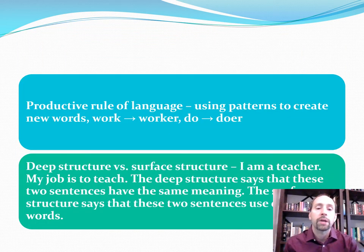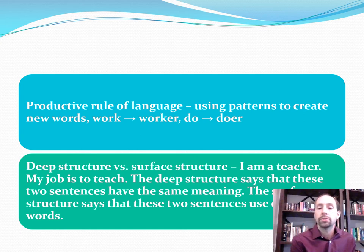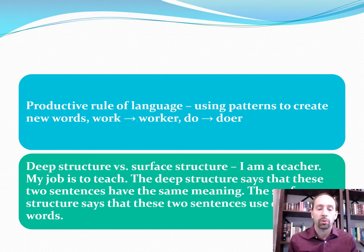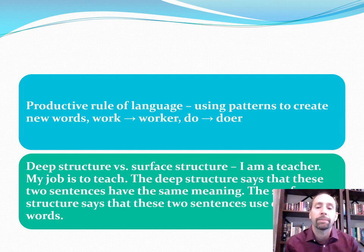Next, the productive rule of language means using patterns to create new words. For example, 'work' becomes 'worker,' 'do' becomes 'doer' by adding '-er.' There could even be a new word like 'text' becoming 'texter' — somebody who texts. Things like that.